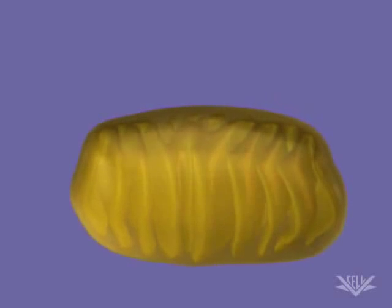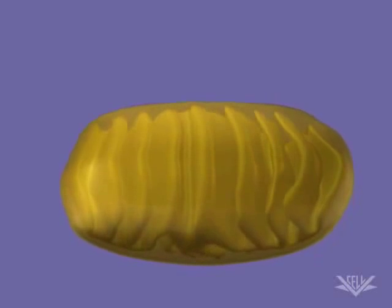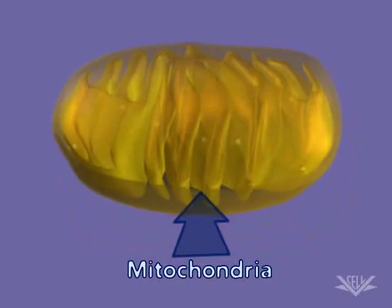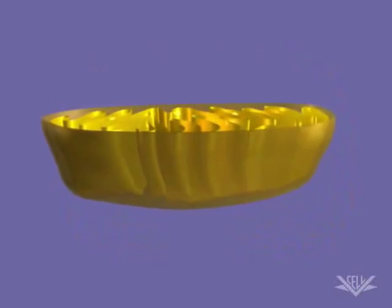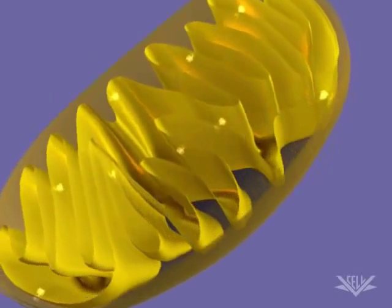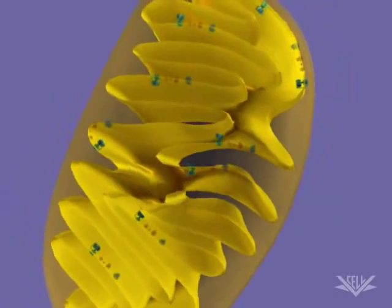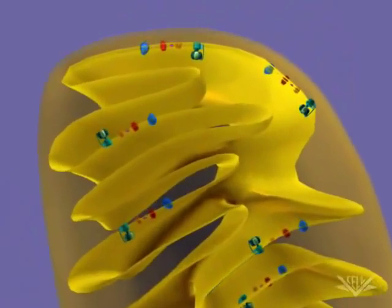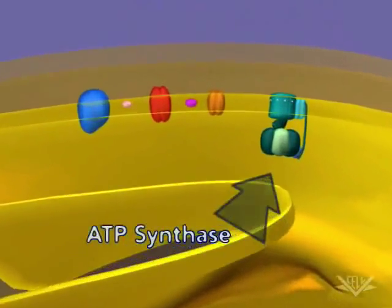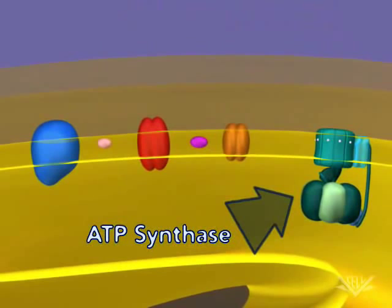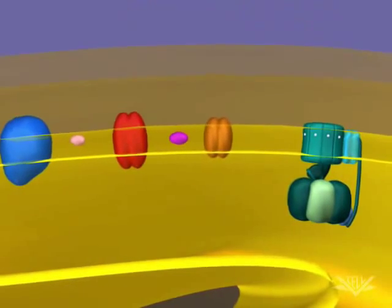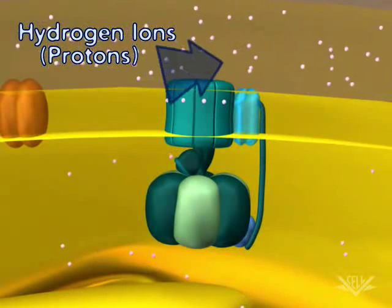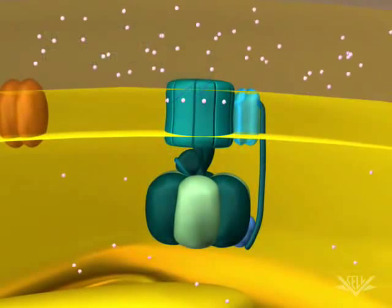Gradients and the potential energy they create are key aspects of the biological world. A good example of the use of a gradient occurs in the mitochondria when ATP is synthesized. ATP is synthesized by ATP synthase, a large complex of membrane-bound protein. Here we see ATP synthase, along with other membrane-bound proteins.